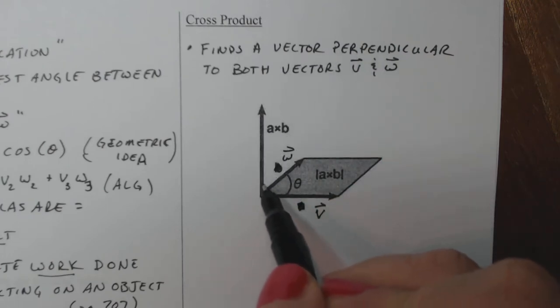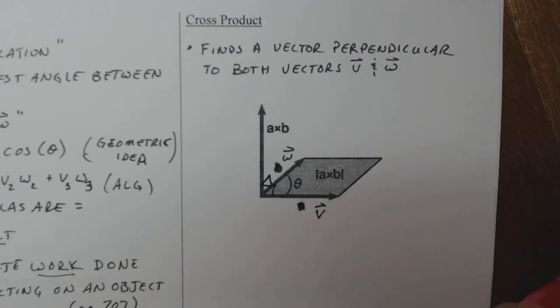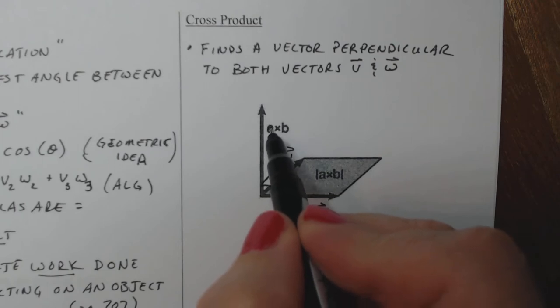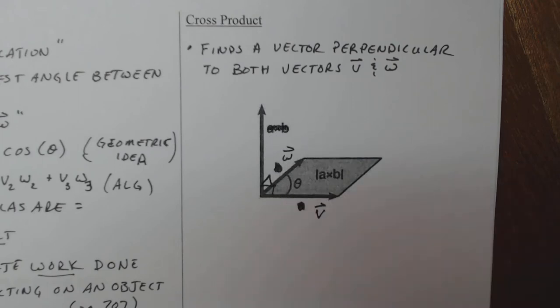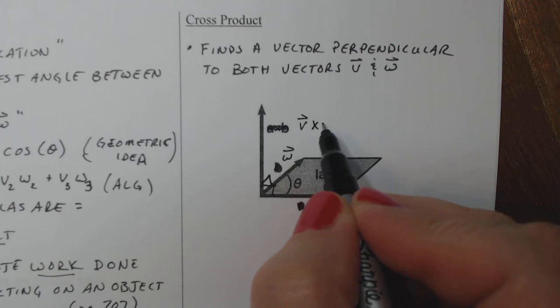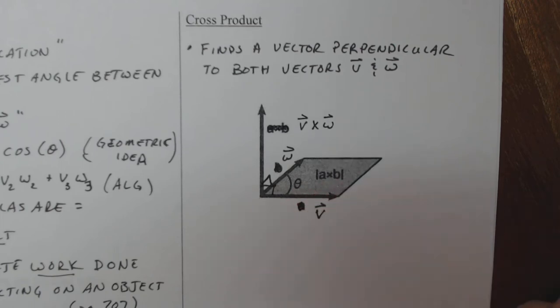And when I do the cross product, I get a vector that's perpendicular to both. So technically, that's perpendicular there. And then it's also perpendicular here. This would be considered V cross W. All right, what else happens here?